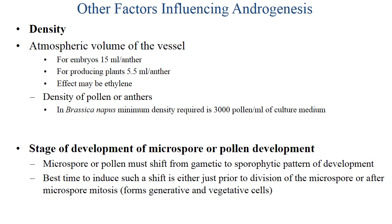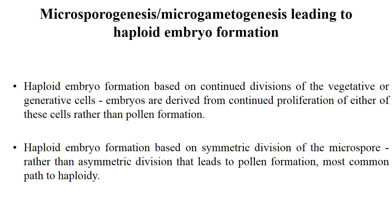Stages of microspore or pollen development: there must be a shift from gametic to sporophytic pattern of development. The best time to induce such a shift is either just prior to division of the microspore or after microspore mitosis. Haploid embryo formation is based on continued division of vegetative or generative cells, and is based on symmetric division of the microspore rather than asymmetric division that leads to pollen formation — the most common path of haploid embryo formation.